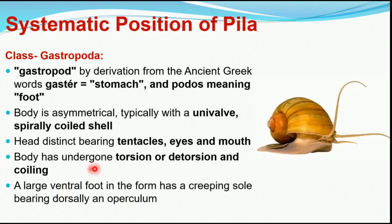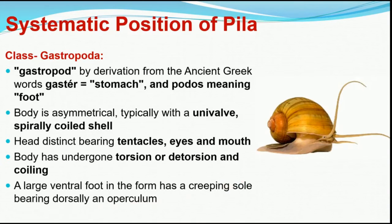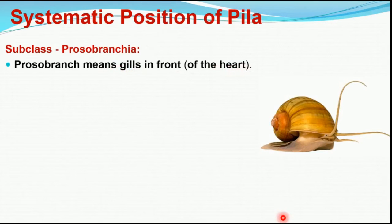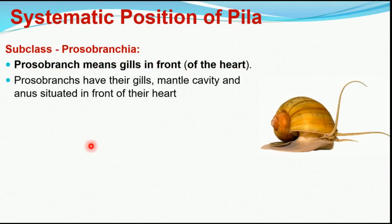They have a large ventral foot which forms the creeping sole and bears an operculum — a lid-like structure to the shell. They are classified in Subclass Prozobranchia because 'prozobranch' literally means gills are present in front of the heart. These animals always have their gills — respiratory structures — present in front of the heart. Not only gills, but the mantle cavity and anus are also situated in front of the heart.